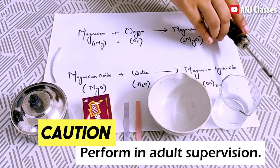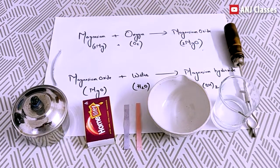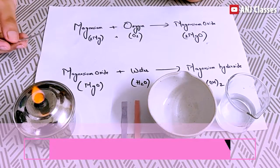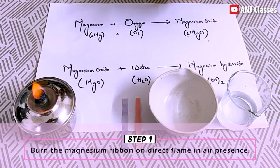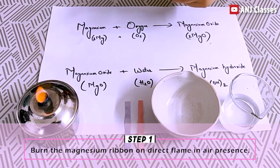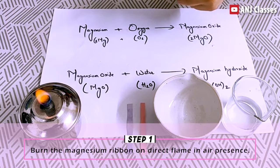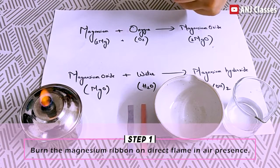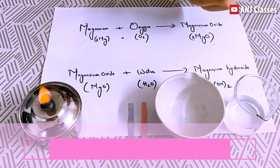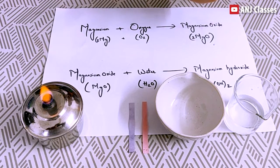Now I have lit my spirit lamp. Now with the help of test tube holder, I'm going to hold my magnesium ribbon and I will place it near my spirit lamp.